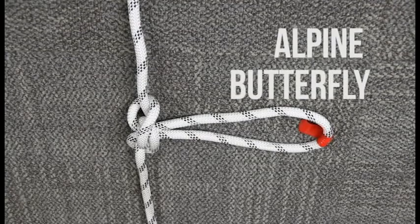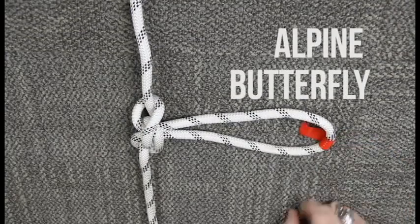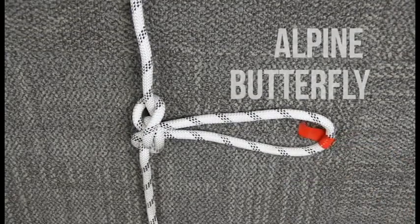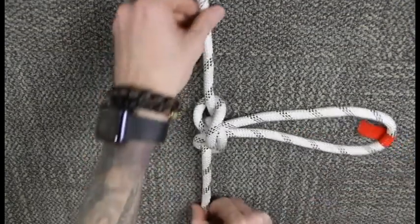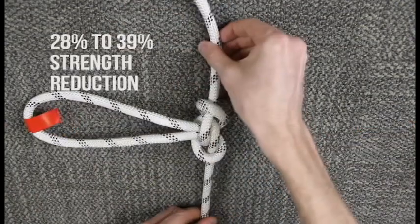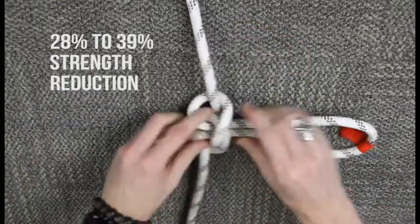So this is the Alpine Butterfly. In this instance we're using it to isolate a damaged section of rope. So you'll see that both sides of it here. Let's show you how to do that.